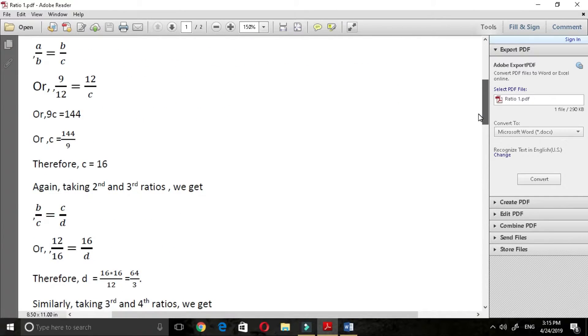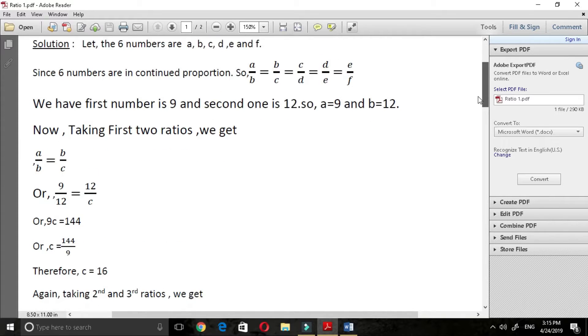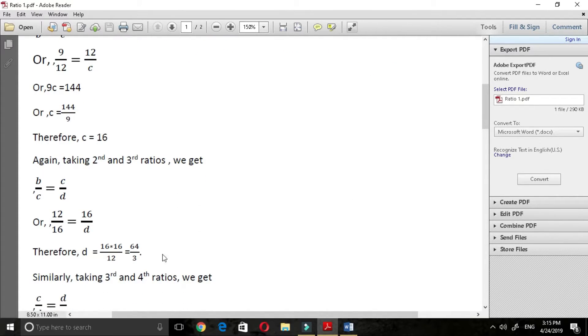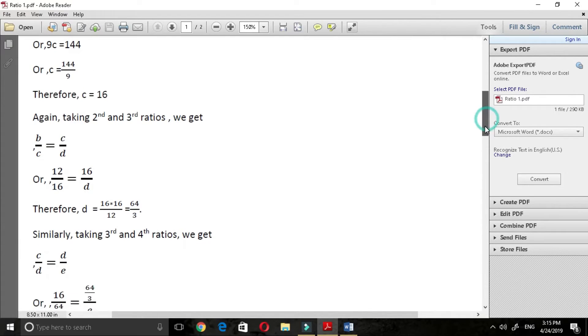again taking second and third ratios, we get b by c is equal to c by d and after solving it, we get d is equal to 64 by 3. And then after,